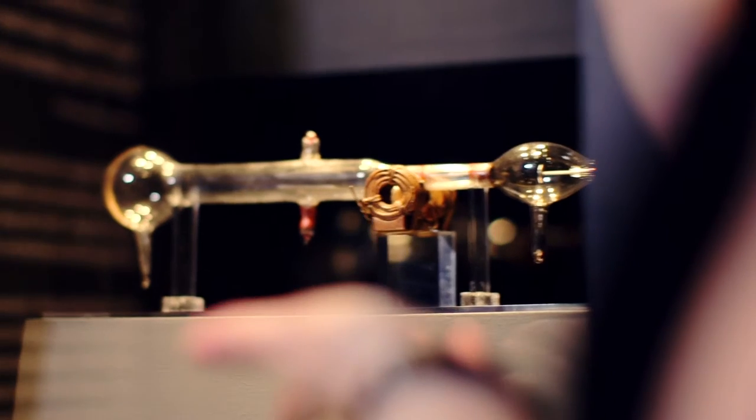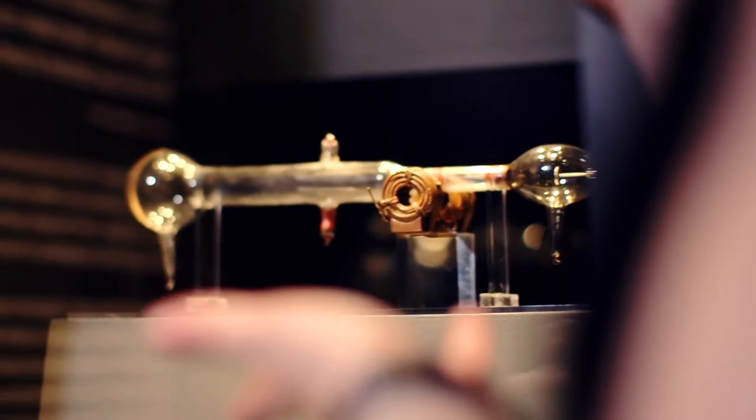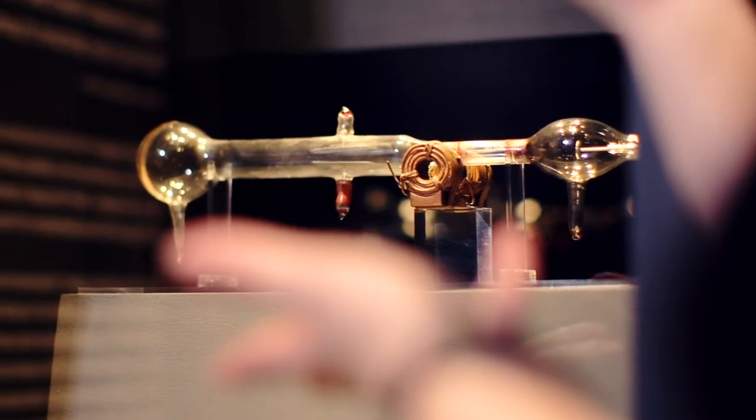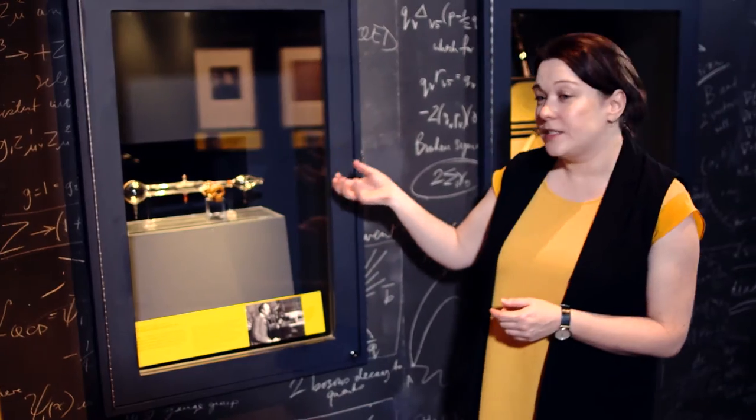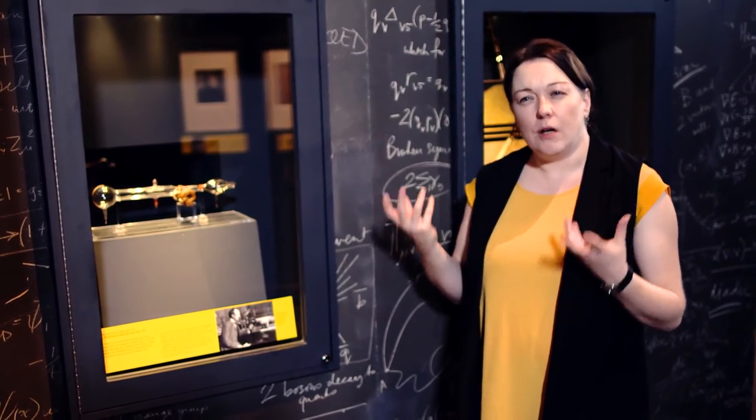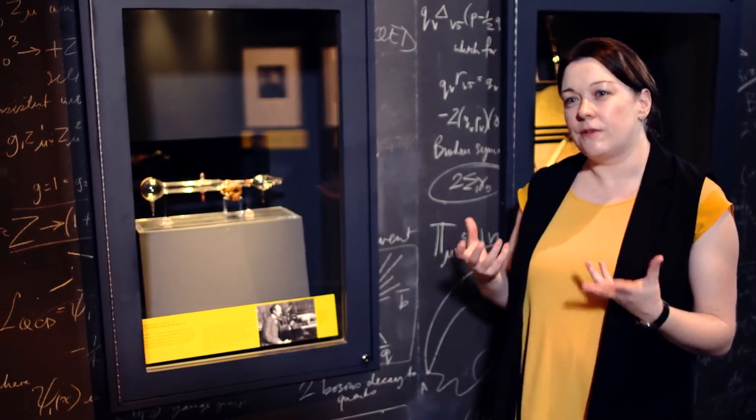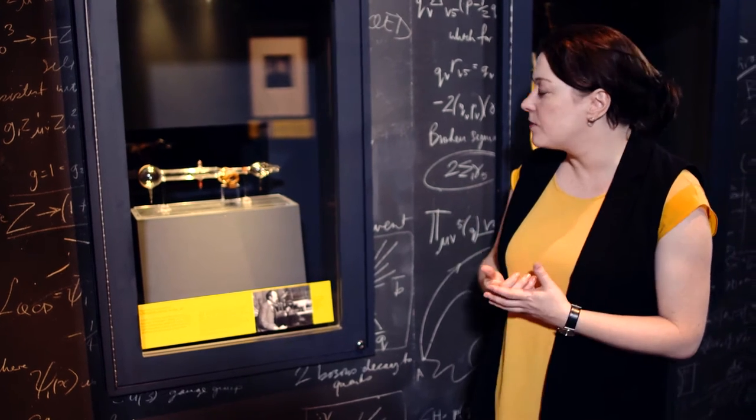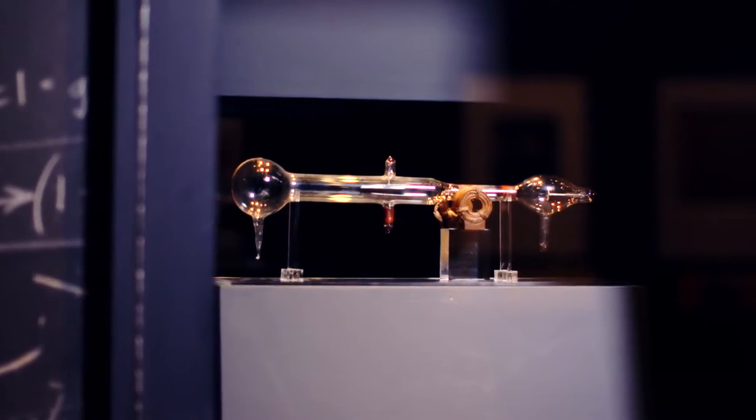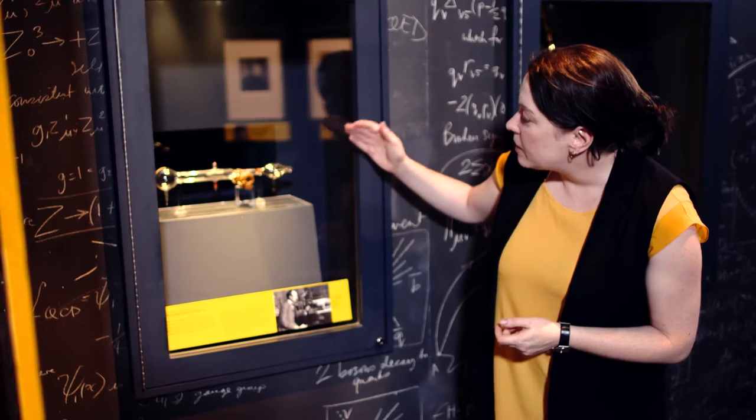This delicate little glass tube is part of the apparatus used by J.J. Thomson in Cambridge, England in 1897. He and his assistant Ebenezer Everett were investigating cathode rays. These were phenomena that were known but not explained, and scientists around Europe were trying to find explanations for what these were. Thomson's apparatus uses electric and magnetic fields to bend these beams of cathode rays.